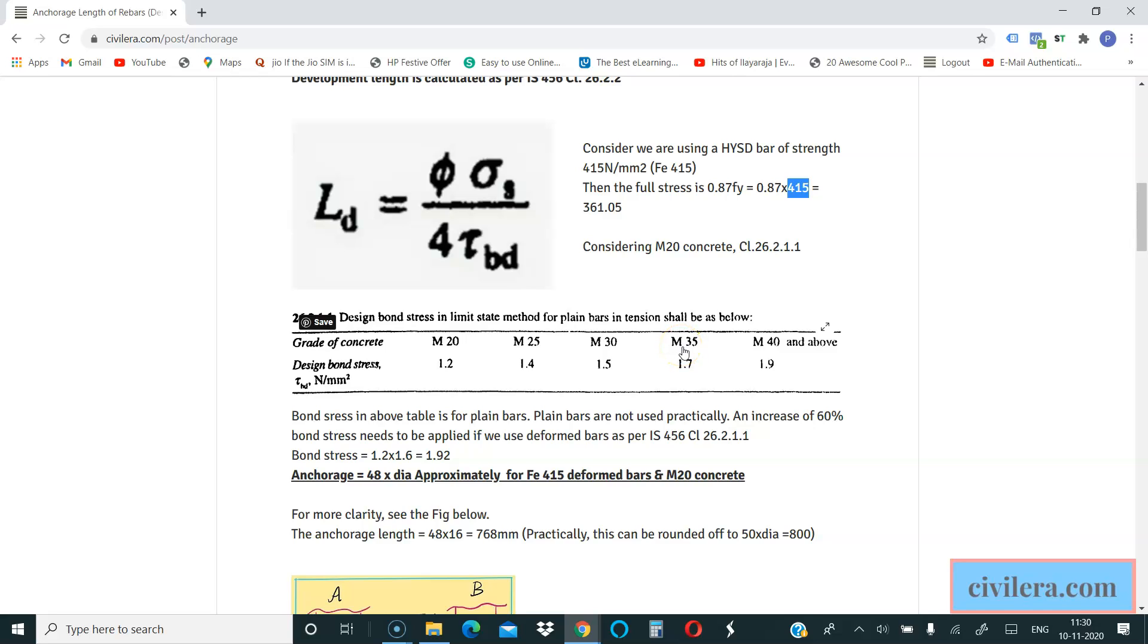The bond stress varies based on the grade of concrete and also on what kind of rebar you are using. This is for plain rebars which we never use. It's all deformed bars, so you have to increase whatever values you have here by 60 percent. So that's also written in the code, so please read the code carefully. It's all mentioned in this blog as well.